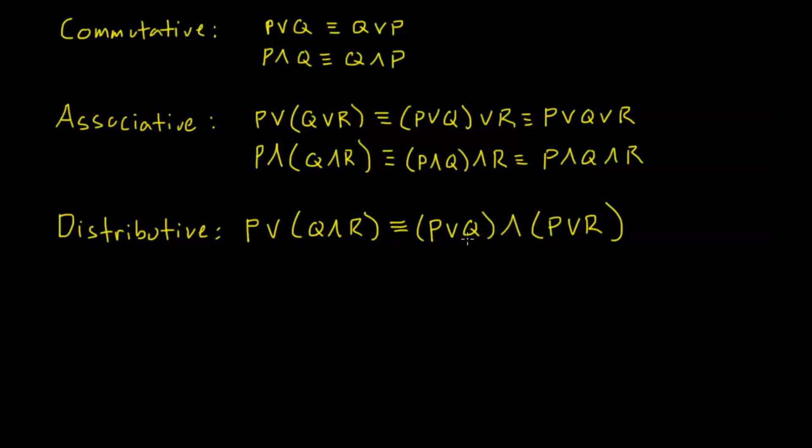On this right-hand side, this is going to be true if P is true. If I say P is true, then this whole statement's true and this whole statement's true, so this whole statement's true. And if Q and R are true, then this whole statement's true, this whole statement's true, which means that this whole statement is true. So these are equivalent statements. They have the exact same truth table.